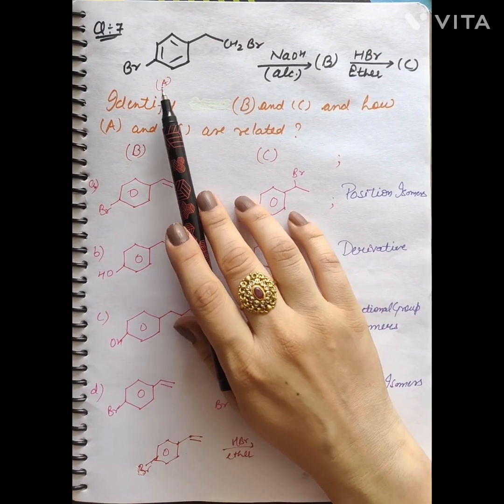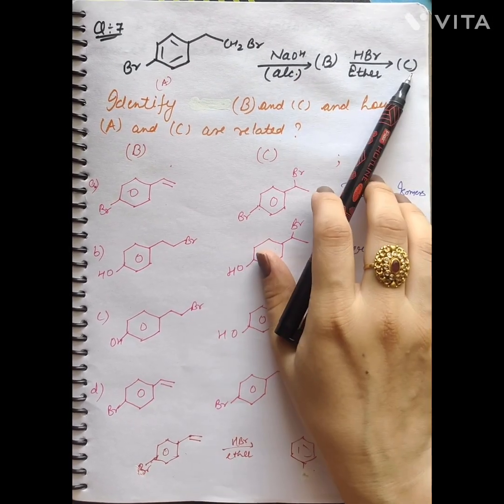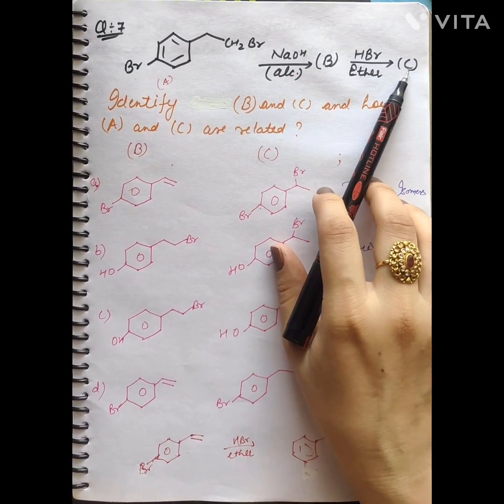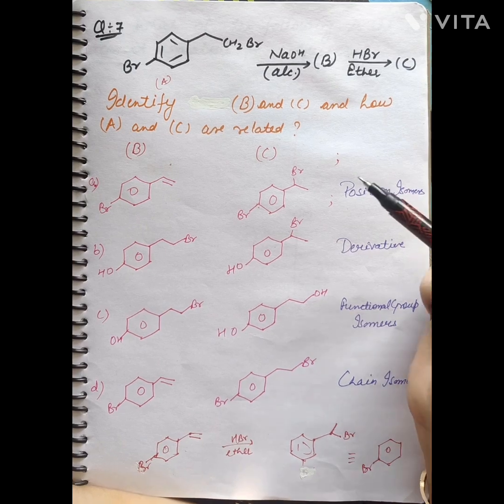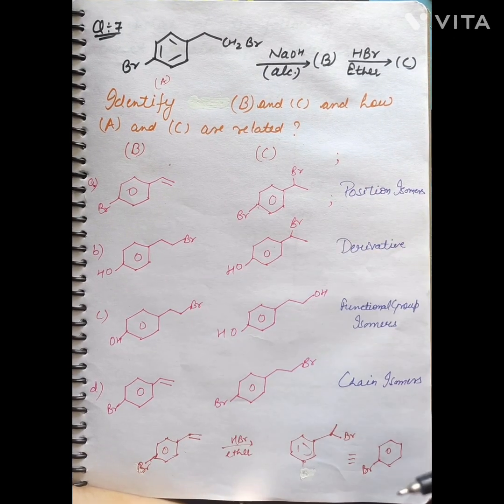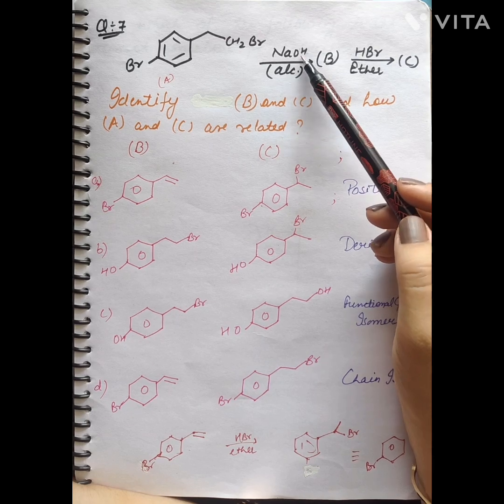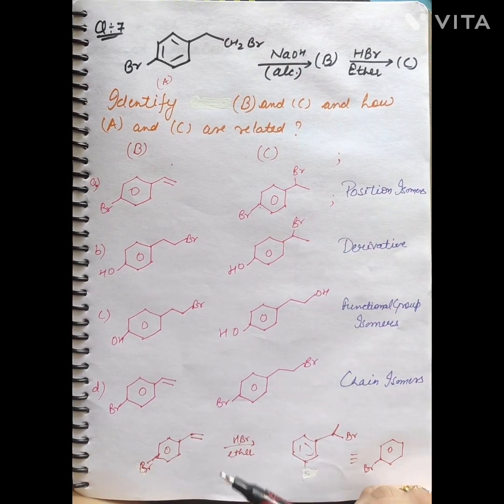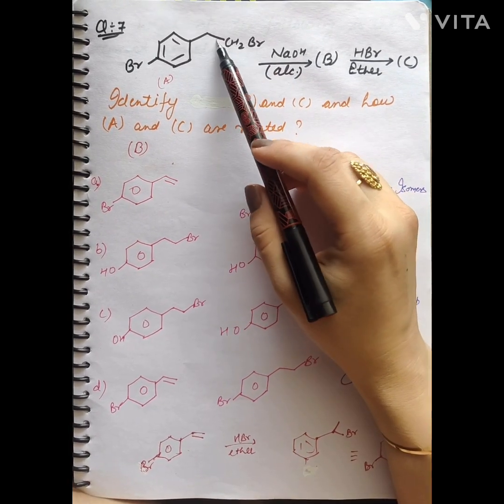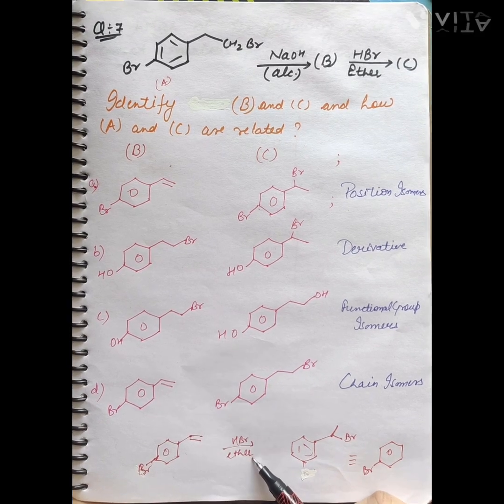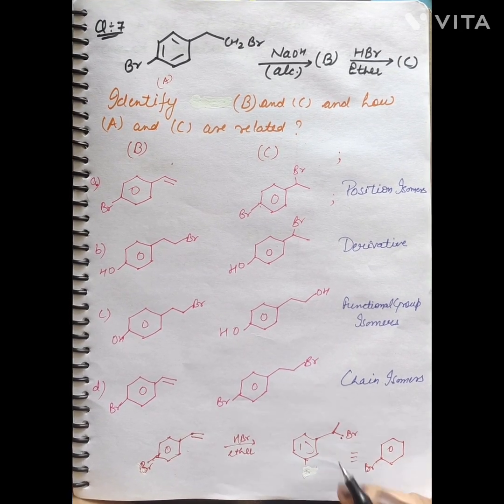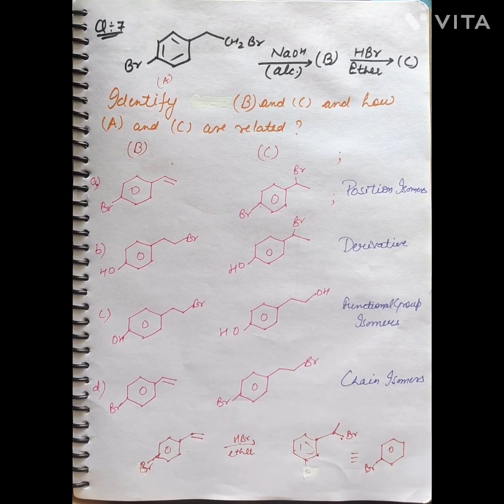Question number 7. You have a reaction condition. We have asked what is B and C, and how are A and C related. What will we do? Alcoholic NaOH will do the elimination reaction. It has double bond. After that, we have added HBr in the presence of HBr ether. So this has become the product. And in the product we have to identify.